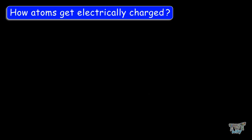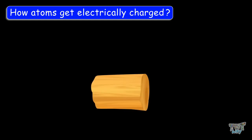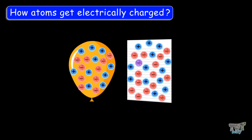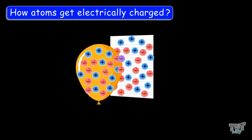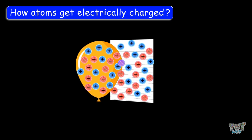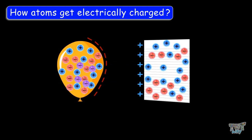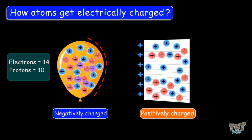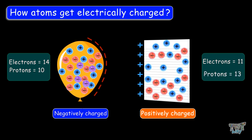Now we have to see how and when atoms get electrically charged. Every object is made up of molecules and molecules are made up of atoms. When we rub two objects against each other, their atoms come in contact with each other, and this results in the shift of electrons from the atoms of one body to the atoms of another body due to friction. The atom which gains electrons becomes negatively charged, because the number of electrons increases compared to the number of protons. The object which loses electrons becomes positively charged, because the number of electrons becomes lower than the number of protons.